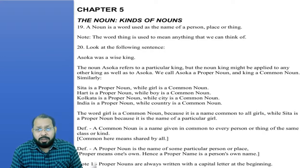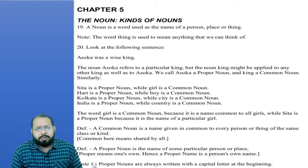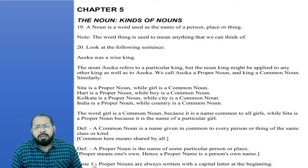The word 'thing' is used to mean anything that we can think of. Look at the following sentence: Ashoka was a wise king. The noun Ashoka refers to a particular king, but the noun 'king' might be applied to any other king as well as to Ashoka.